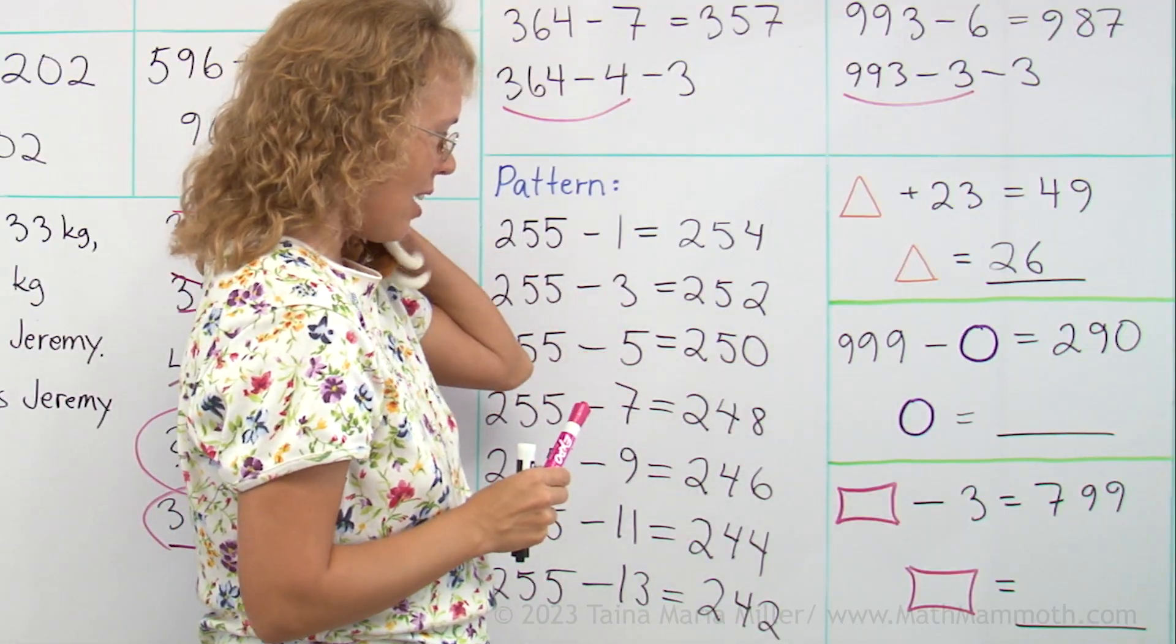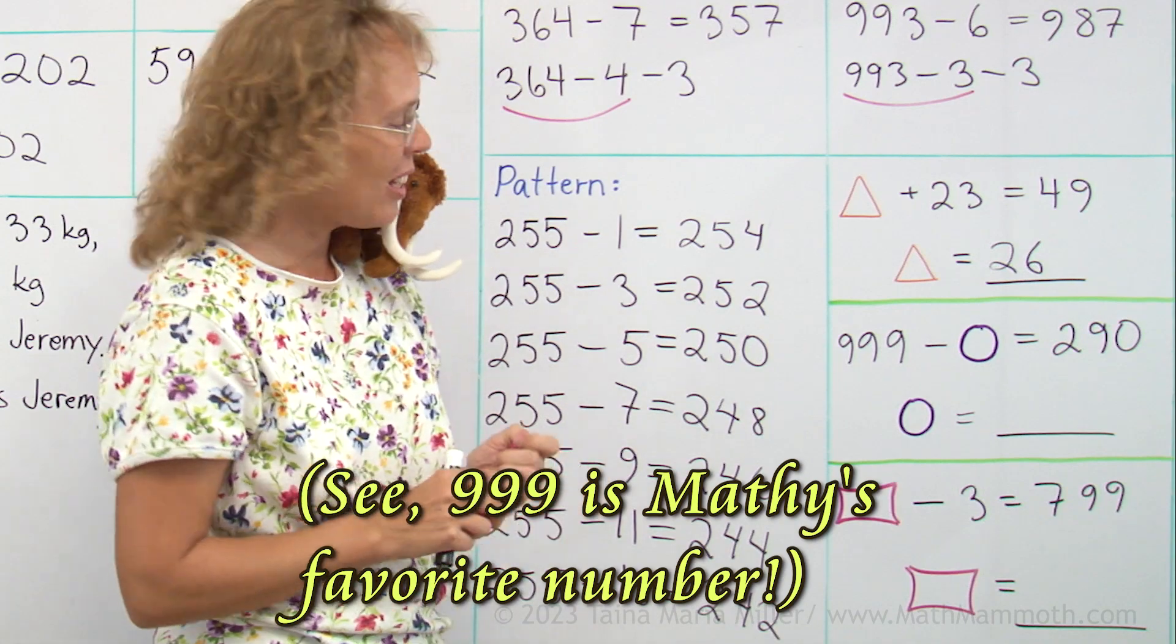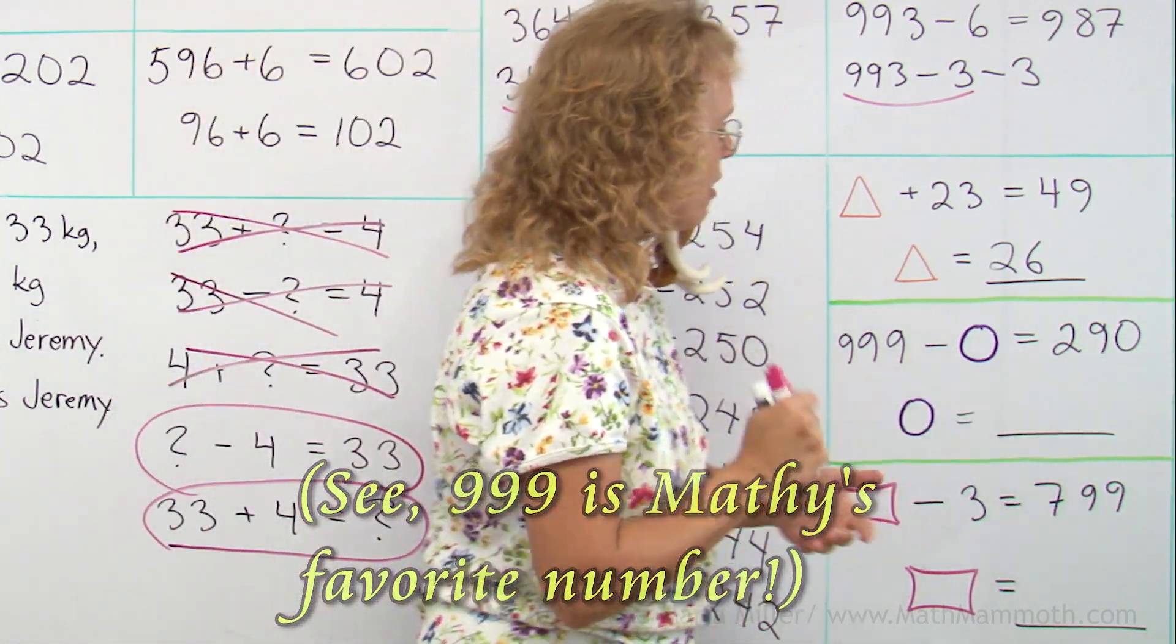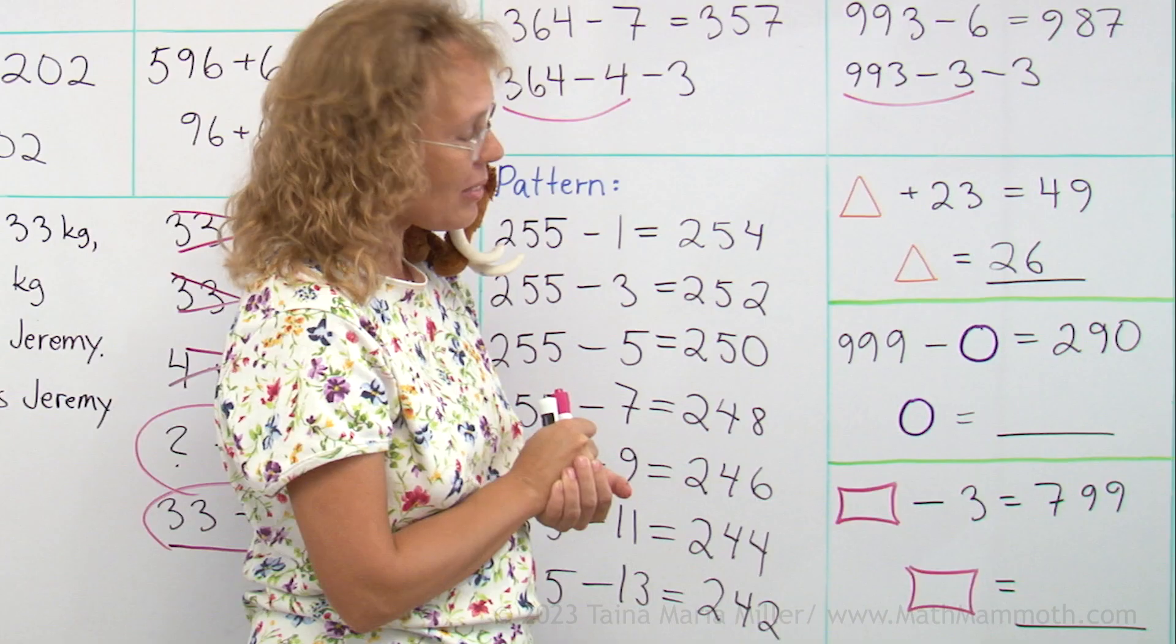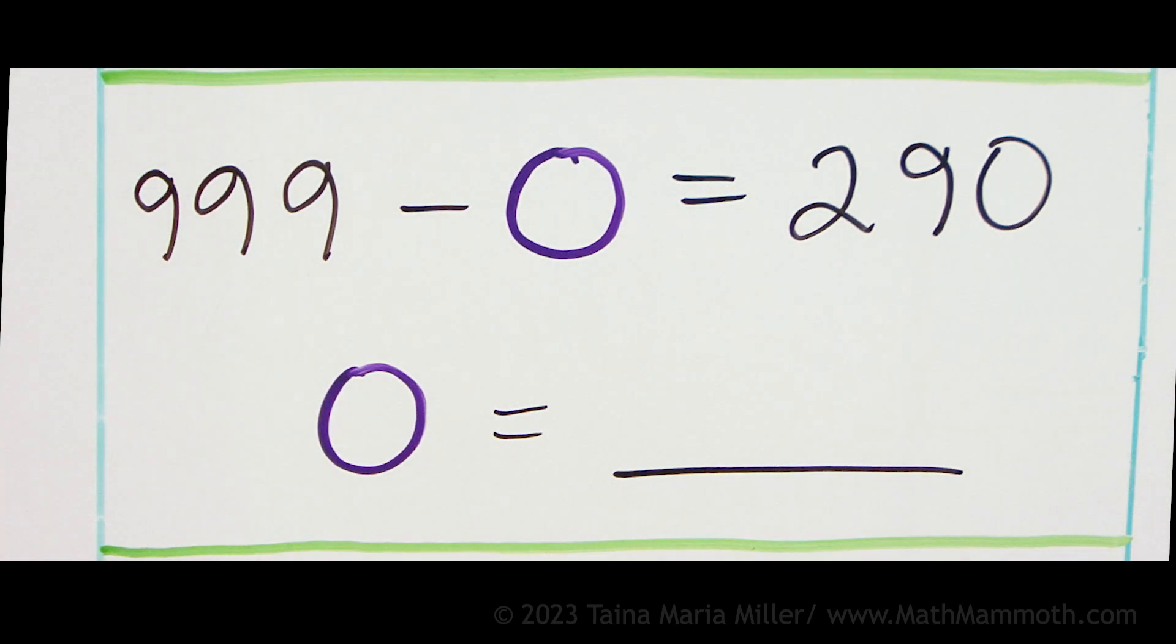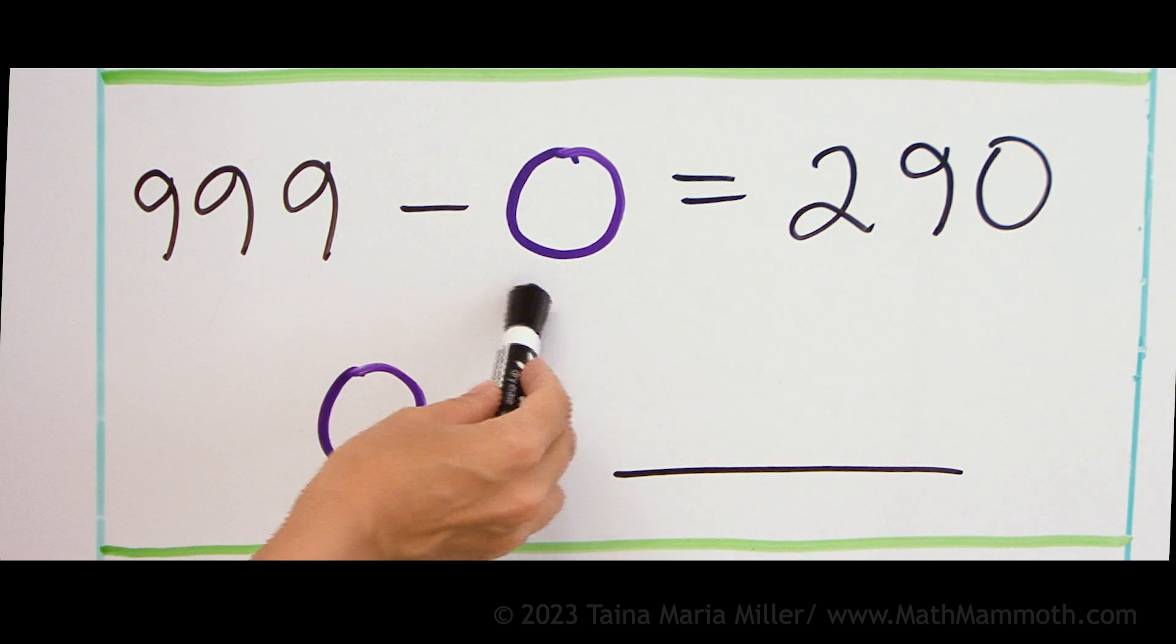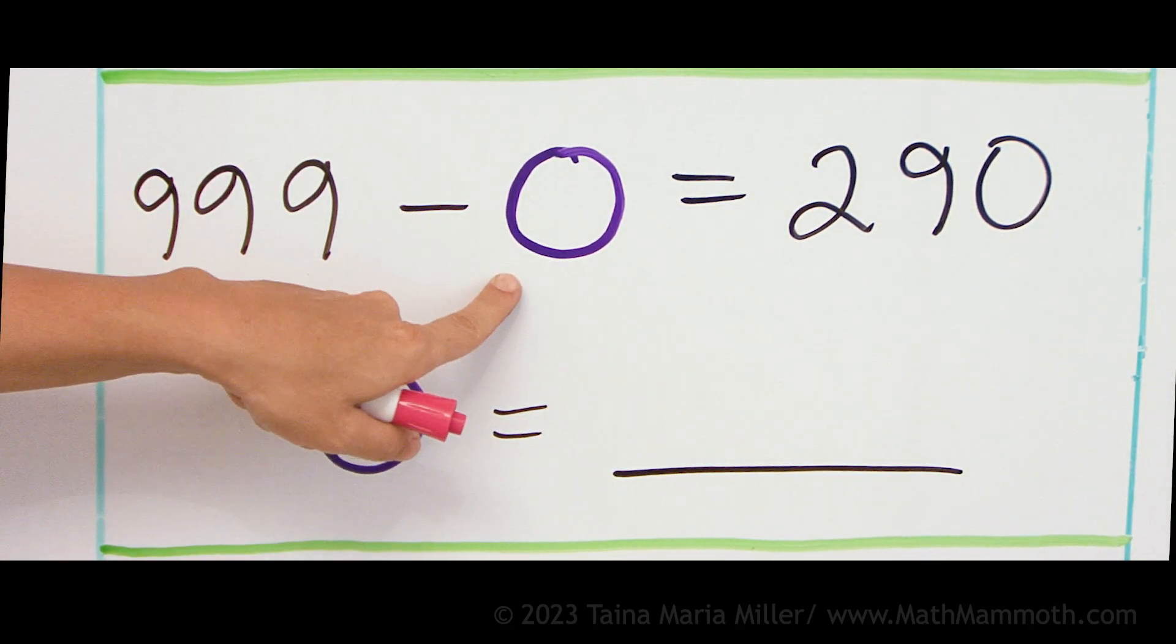This one, look Matthew, he's excited. 999 minus something leaves 290. You know what? If it was 299 here, then it would be real easy, right? 999 minus something equals 299, then that would be exactly 700 here.